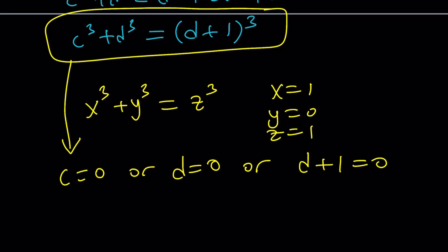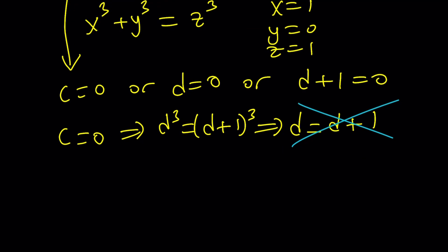Let's take a look. If C is equal to 0, what happens? We're going to be looking at each case. If C is 0, then we get d³ = (d+1)³. And from here, because by cubing both sides, remember C and D are real numbers, D = D + 1. Uh-oh, that's not going to work. That's impossible. So C = 0 did not work.